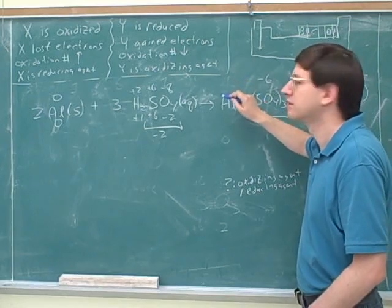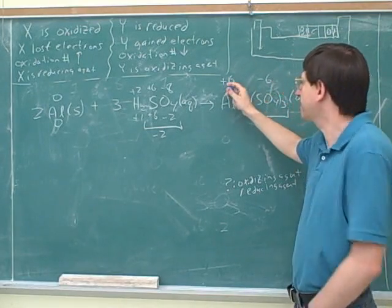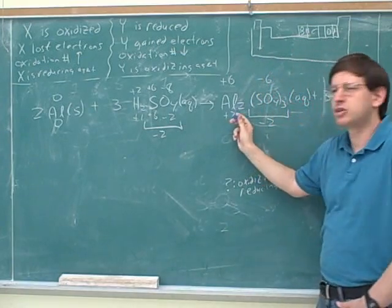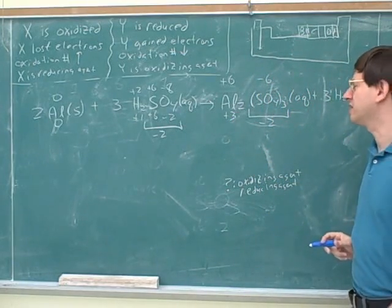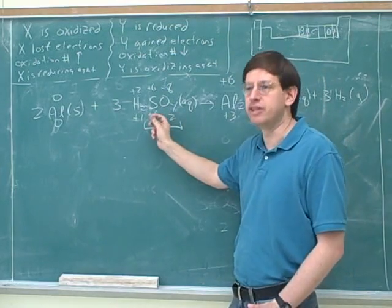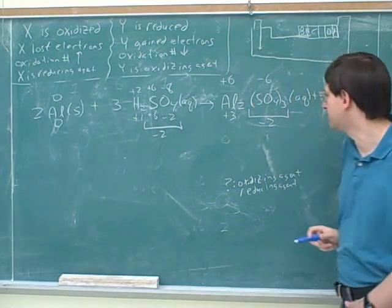So what would the charge on the aluminum be? 3 is only 6. Yeah. We know that overall, these have to be plus 6 to cancel the minus 6. So each individual has to be plus 3. Here you can start to see why it's helpful to put the groups up above and the individuals down below, so we can keep track of all the different numbers.